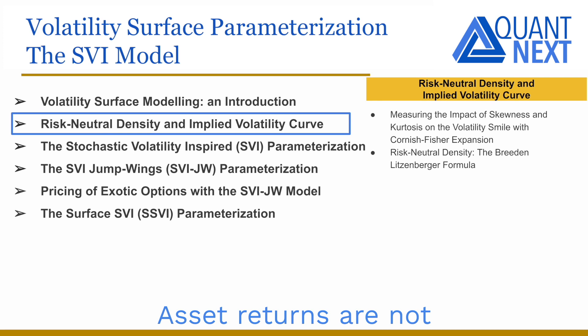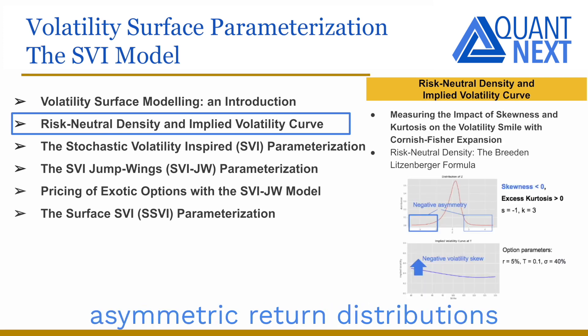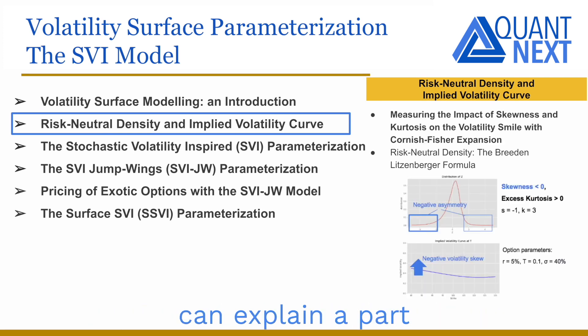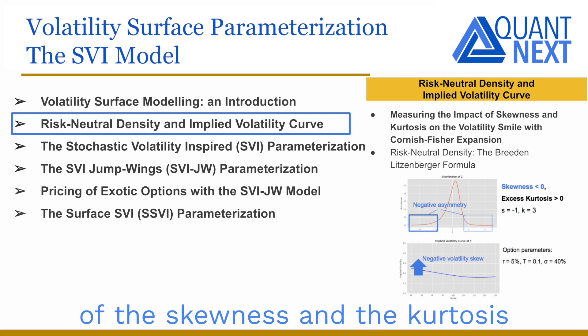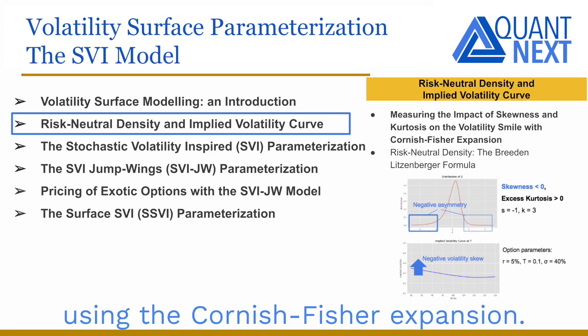Asset returns are not log-normally distributed. Extreme risks and asymmetric return distributions can explain a part of the shapes of the volatility curves. We will measure the impact of the skewness and the kurtosis on the volatility smile using the Cornish-Fisher expansion.